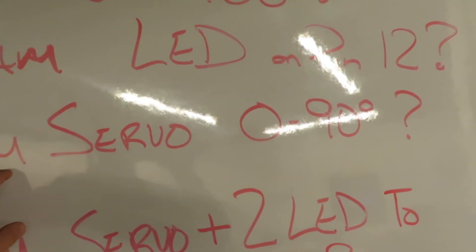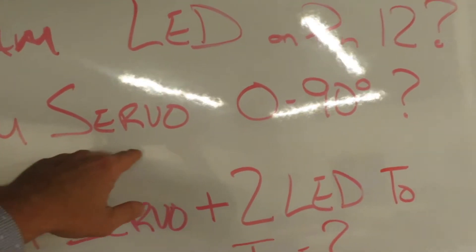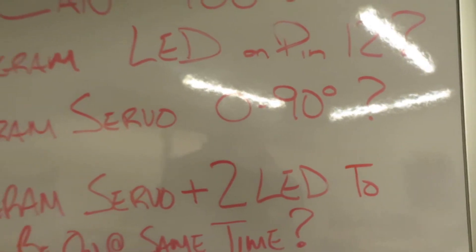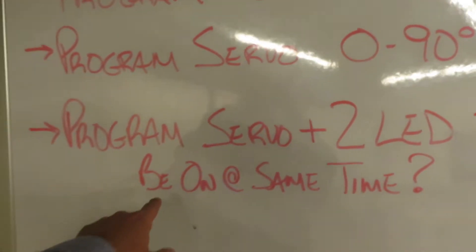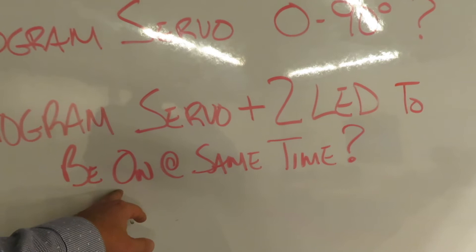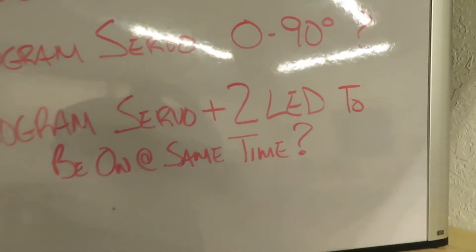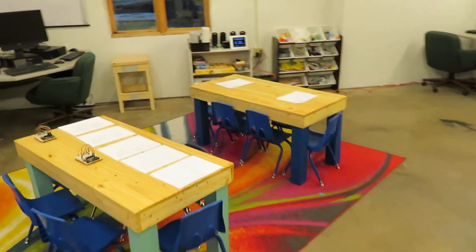Then we're going to get into the servo motor and try to see if they can actually get it to program from 0 to 90 degrees and so we'll explain why that's a challenge and then finally getting them to think can they get the servo and two LED lights to be on at the same time which is what they're going to need for their pumpkin in the next two classes.